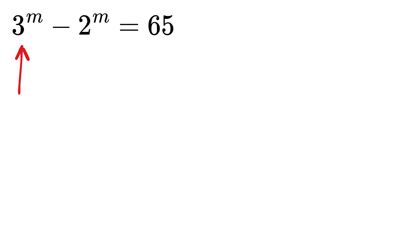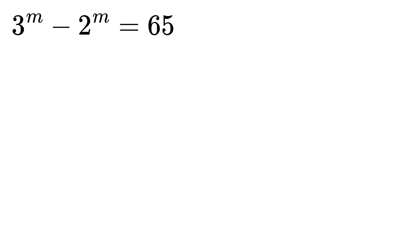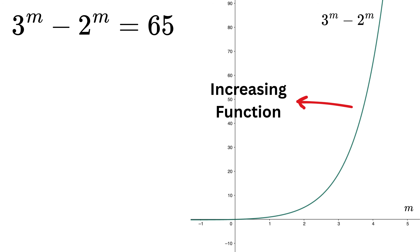We are given an equation 3 raised to power m minus 2 raised to power m is equal to 65. Can you find the value of m? Before we proceed to solve it analytically, look at the graph of 3 raised to the power of m minus 2 raised to the power of m on the y-axis versus m on the x-axis.